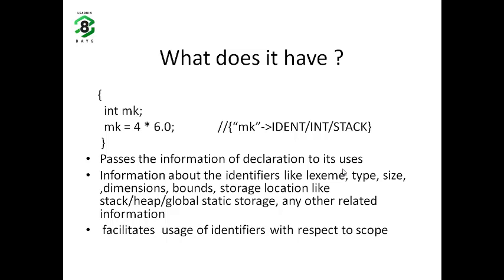So what do we store in the symbol table? What does it have? Let's look at the example code snippet again. It declares a variable named MK, which is of type int. Also, it is assigned a value. And if you look closely, everything is inside a curly brace. And so, this defines a scope for the variable MK and its usage.